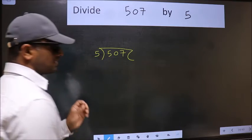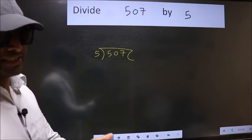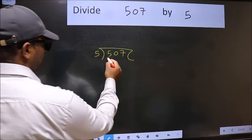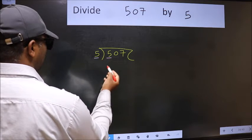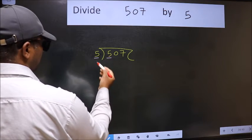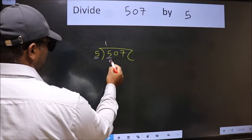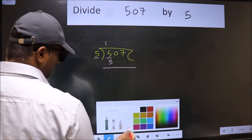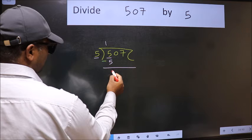This is your step 1. Next, here we have 5 and here also 5. When do we get 5 in the 5 table? 5 once is 5. Now we should subtract. We get 0.